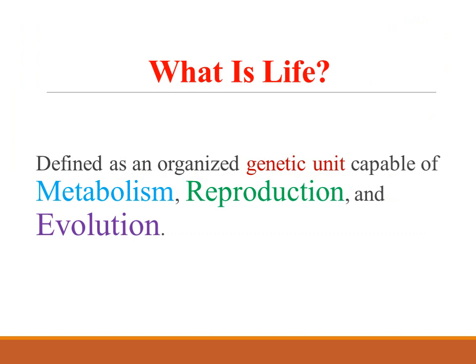What is life? In science, life is defined as an organized genetic unit capable of metabolism, reproduction, and evolution. A genetic unit which can perform these three things — metabolism, reproduction, and evolution — can be called life. You are well aware of metabolism; reproduction means organisms which can produce offspring, and evolution means organisms which can undergo changes from time to time.